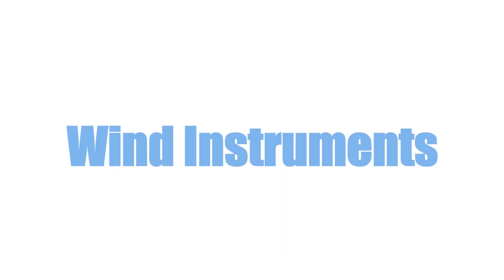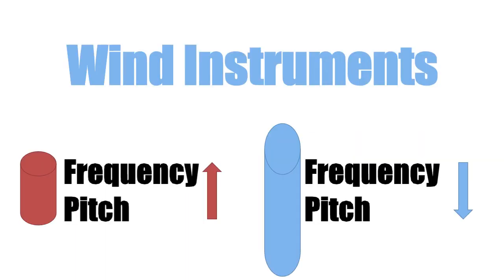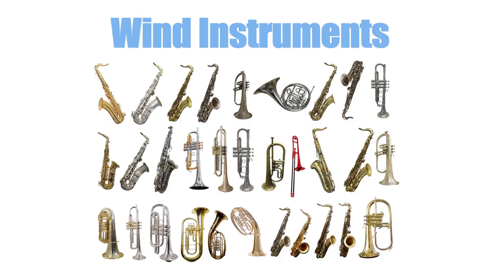Now let's talk about wind instruments. The sound of a wind instrument is produced by an air column. When the column is shorter, the frequency gets high and it will produce a higher sound. When the column is longer, frequency gets low and it will produce a low sound. Let's have a look at some wind instruments.